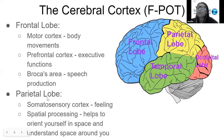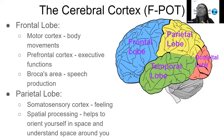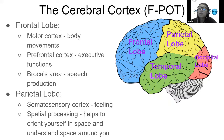Next is the parietal lobe — the yellow portion — which is responsible for feeling from the somatosensory cortex. When I say feeling, it's not emotions, but feeling as in touching, temperature, pressure, and pain. The parietal lobe is also responsible for spatial processing, helping you orient yourself in a space and understand the space around you.